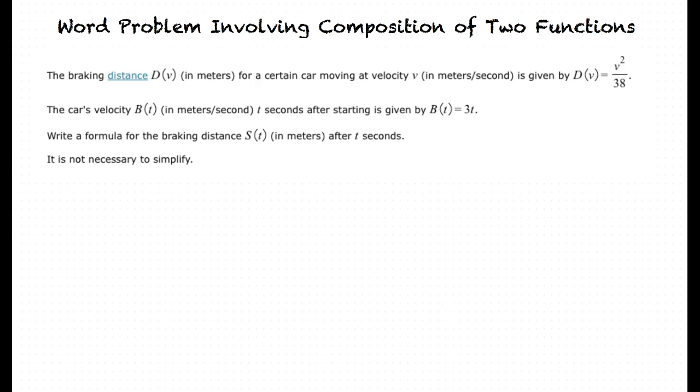Our first example will be, the braking distance, d of v, in meters for a certain car moving at a velocity v in meters per second, is given by d of v equals v squared over 38.